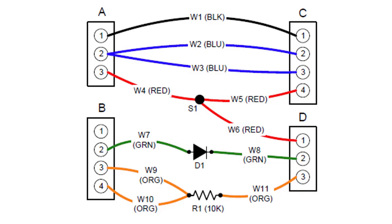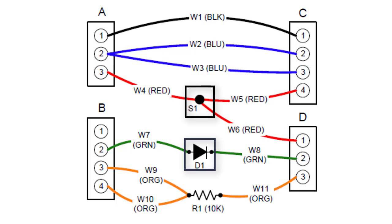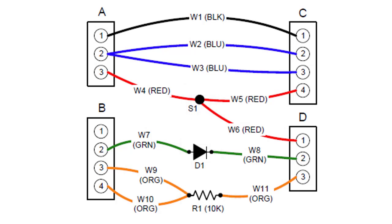Here is a schematic of the tutorial wire harness. The harness has four connectors, labeled A, B, C, and D. The harness also includes a splice, a diode, a resistor, and two double connections. One of the double connections is on one side of the resistor. The other double connection is on pin two of connector A.